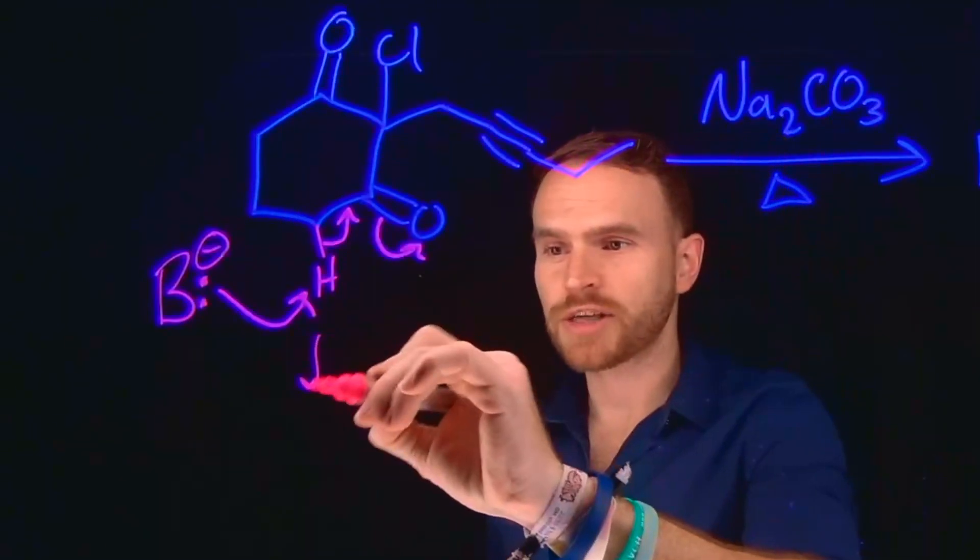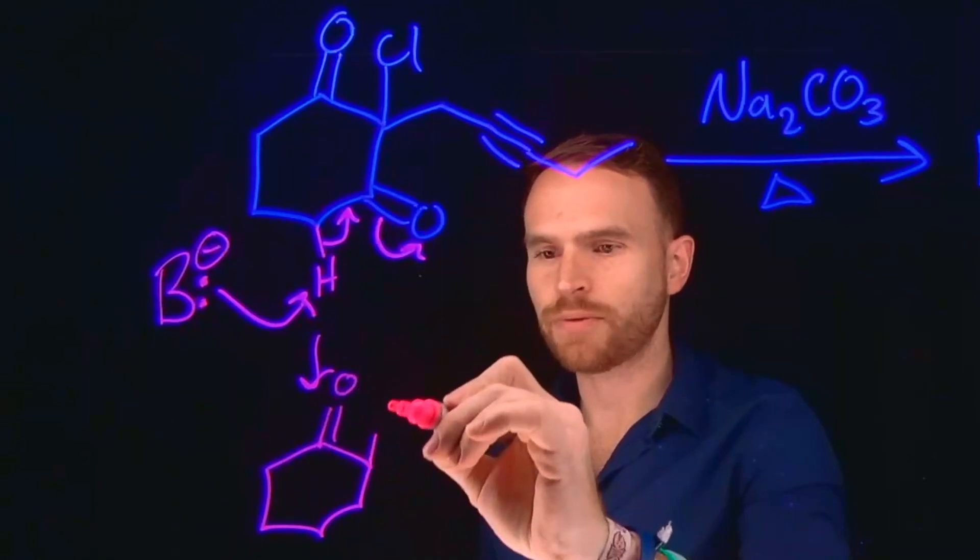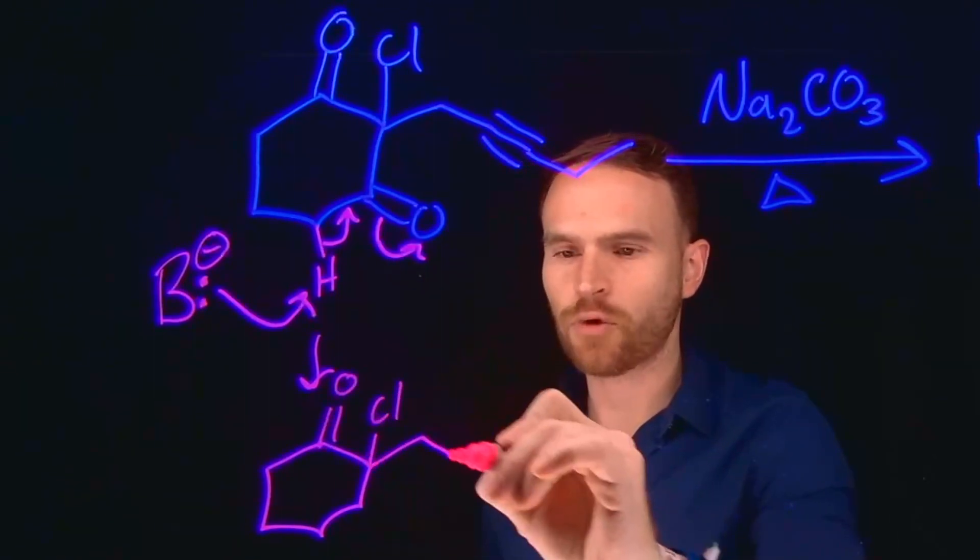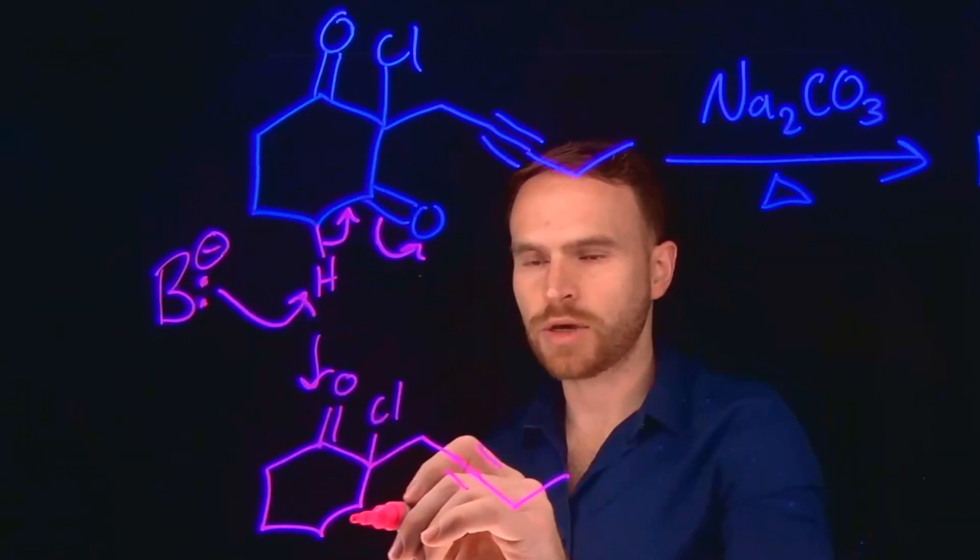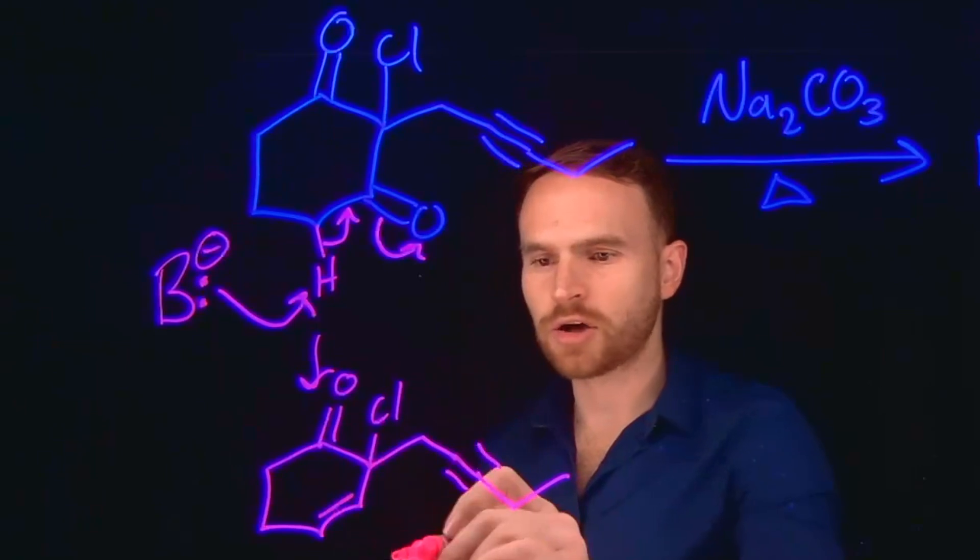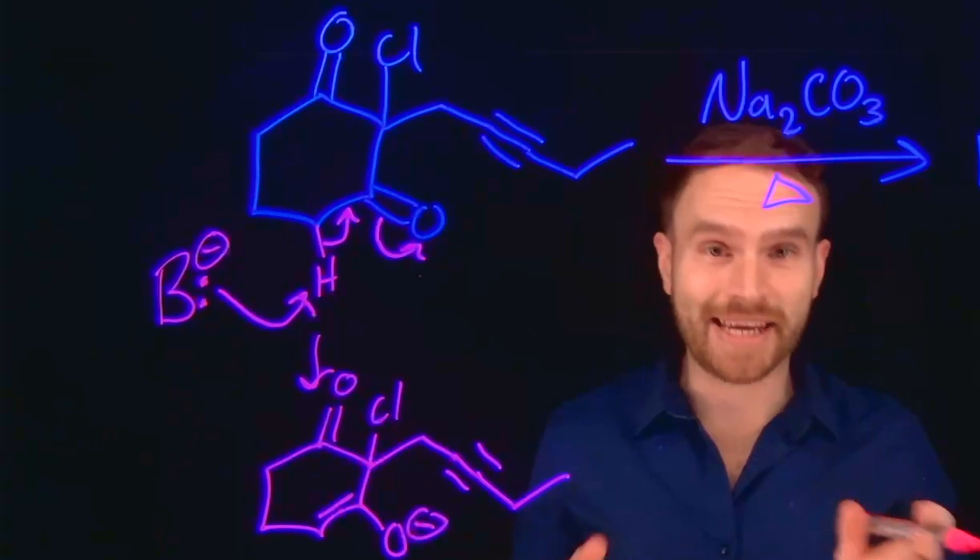So then the product of this transformation is going to be what's known as an enolate, which if you've taken organic chemistry before, you've likely seen the formation of enolates in different types of mechanisms. So here we now have a new carbon-to-carbon double bond, as well as a negatively charged oxygen. And this part is known as an enolate.